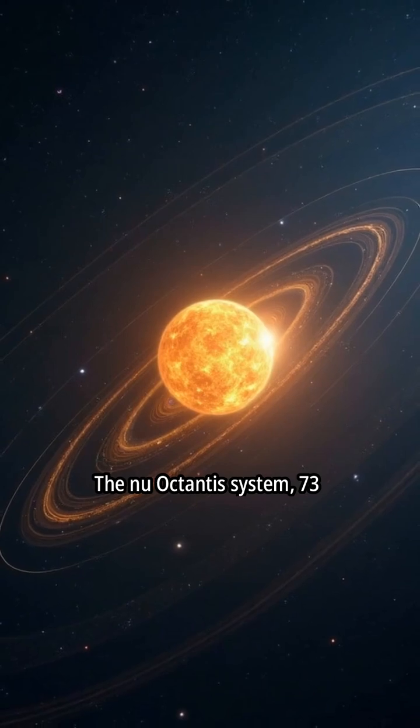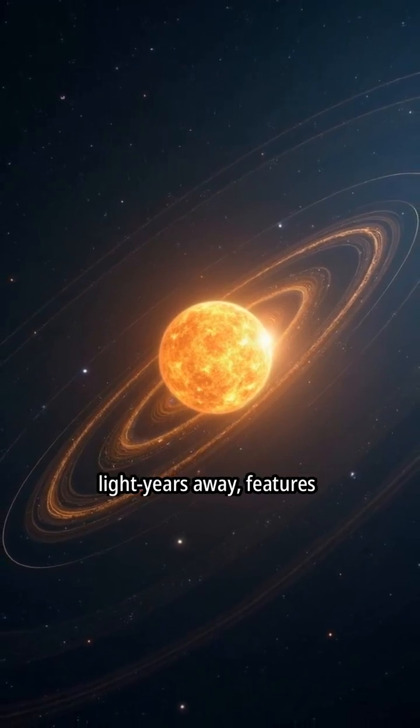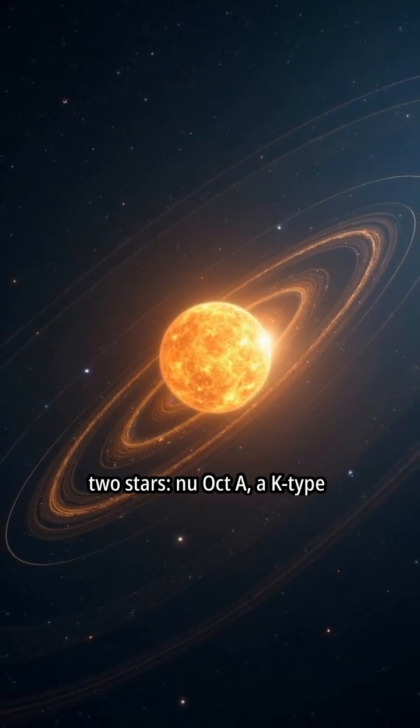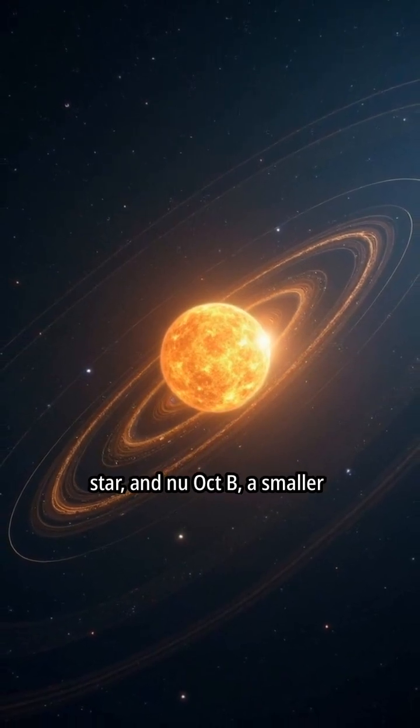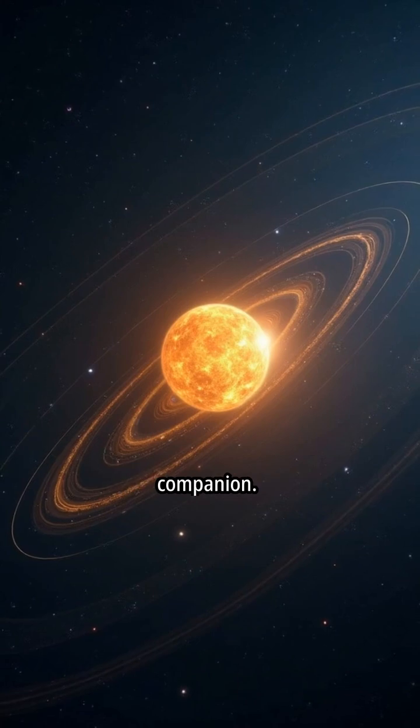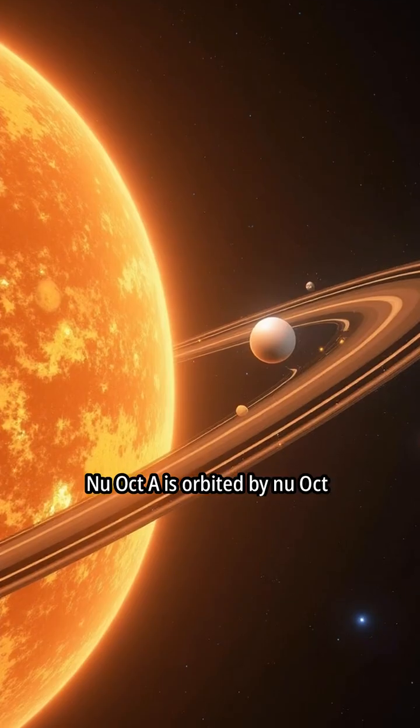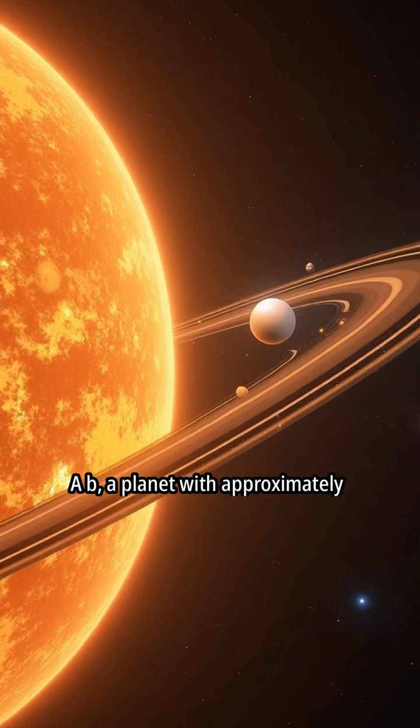The Nu Octantis system, 73 light-years away, features two stars: Nu Oct A, a K-type star, and Nu Oct B, a smaller companion. Nu Oct A is orbited by Nu Oct A B.